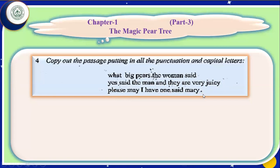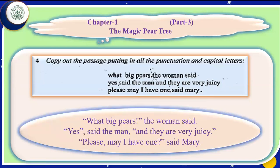I think it is clear now. Now I shall show you the answer. 'What big pairs' is written in inverted commas with a sign of exclamation because there is a strong feeling behind it, then a full stop. 'Yes' is in inverted commas with a comma; after 'man', comma; 'and they are very juicy' is also in inverted commas with a full stop. 'Please, may I have one' is in inverted commas — this is a question, so there is a question mark. M for Mary is capital, and at the end there is a full stop. I think you know now how to do this question. Let us move to the next question.